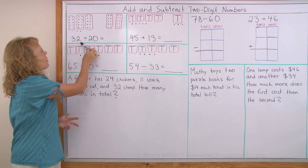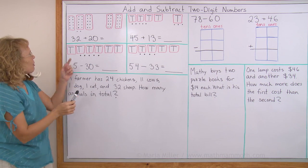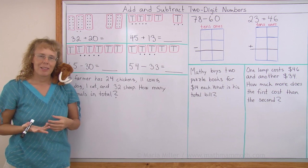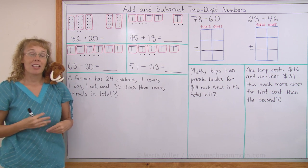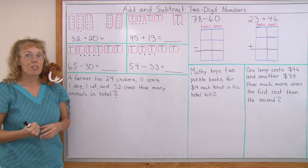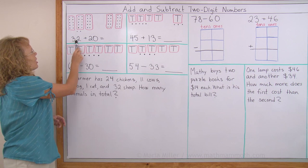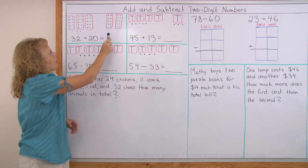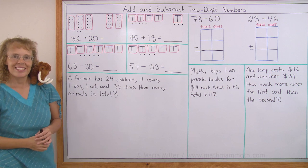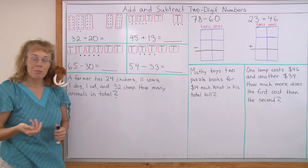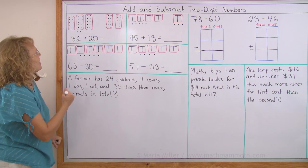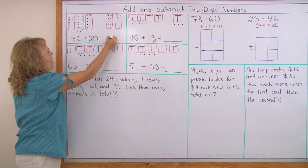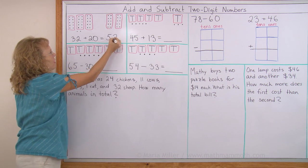Let's look at this first example in this box. We're adding 32 plus 20. Now maybe you can solve it without any model, but I'm going to use the model to help me. 32 is this number here, three tens and two little dots. 20 is this number here, two tens. And now we just check how much we have in total, because we're adding. So in total I have five tens, right? And two. 52.